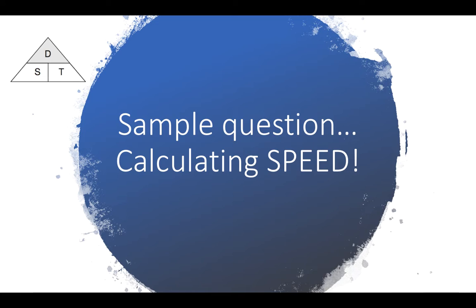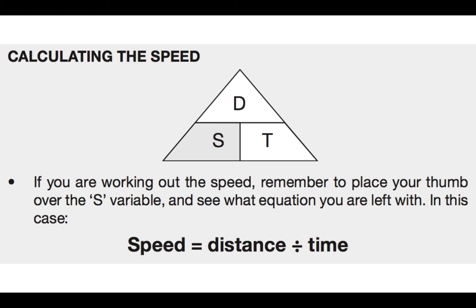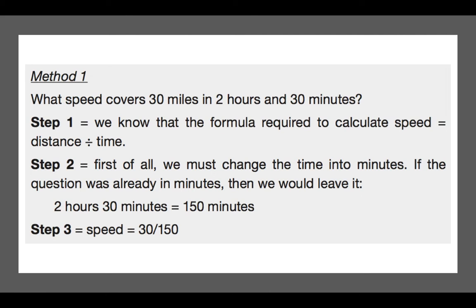So let's have a look at a sample question before I give you some to try yourself live here on the video under timed conditions. So we're going to look at calculating speed specifically right here. So to calculate the speed, we put up the triangle there. And if you're working out speed, remember to place your thumb over the S variable and see what equation you're left with. And in this case, it's speed equals distance divided by time.